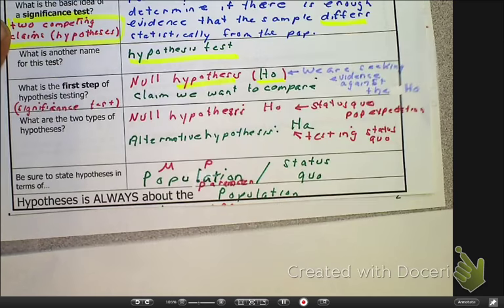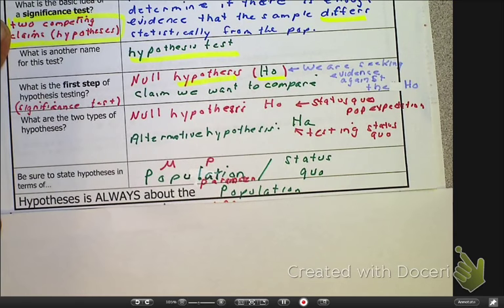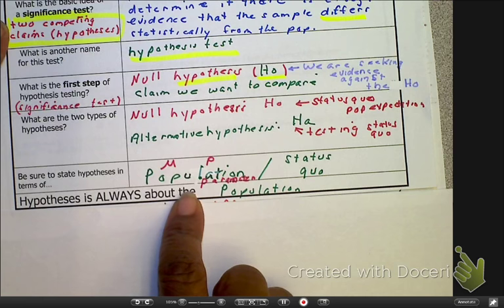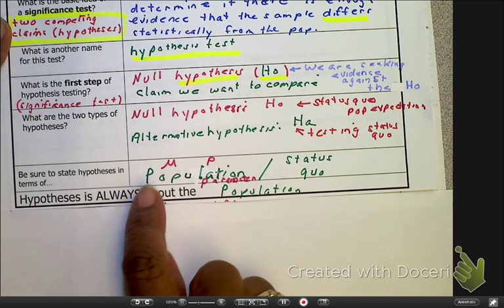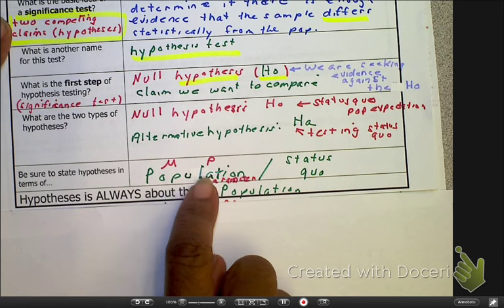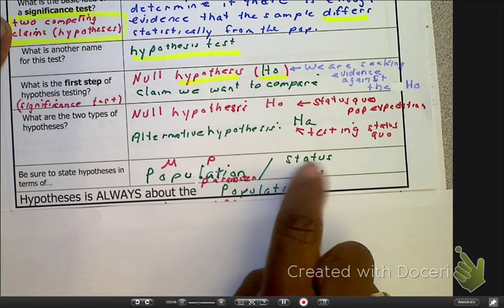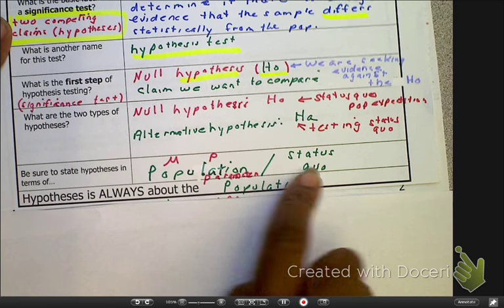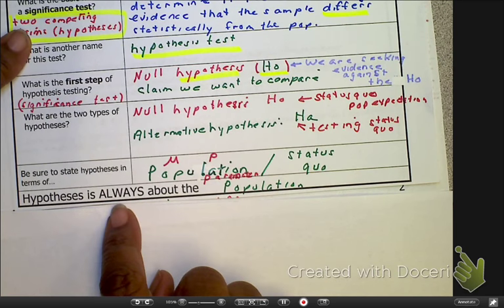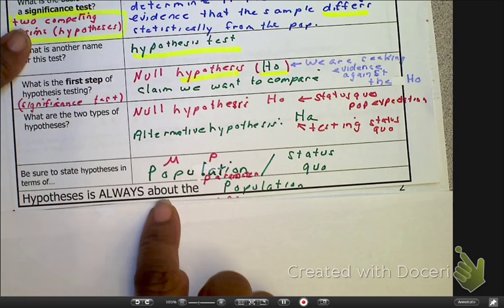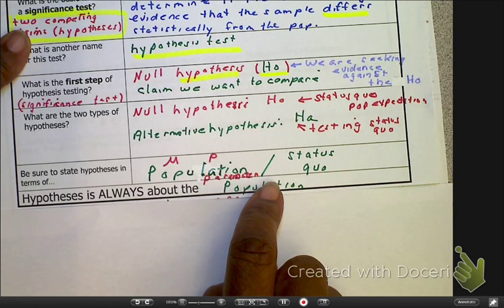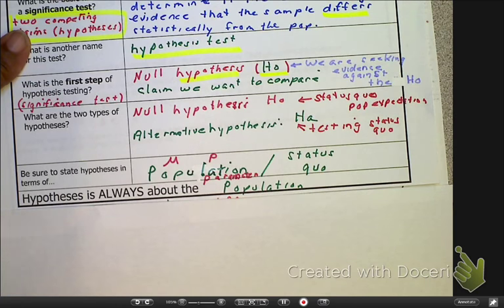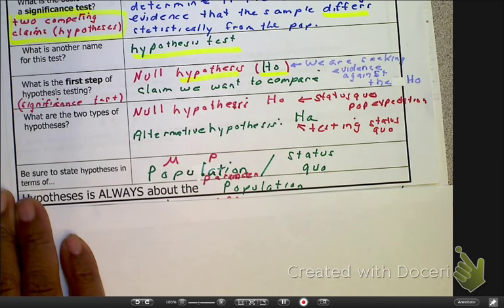Now, a couple things we need to make sure that you remember. Make sure to state the hypothesis in terms of the population. So, whether it's mu or p, no hats allowed. Mu or p, it's always about the population. And remember, the population is the status quo or the company expectation. So, yes, the parameter. Also, hypothesis is always about that population. So, it is always. Let's go to the next page.